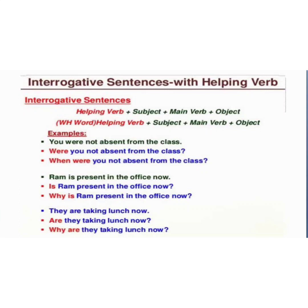Take this statement: 'You were not absent from the class.' To change it into an interrogative sentence with the helping verb first: 'Were you not absent from the class?' Here, 'were' is the helping verb, 'you' is the subject, 'absent' is the main verb, and 'from the class' is the object. For a WH question, 'when' comes at the start, and the remaining structure — helping verb, subject, main verb, object — stays the same.